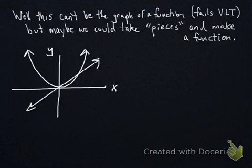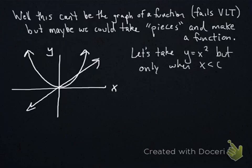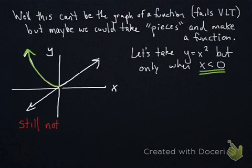Here's what I mean by take pieces of it. Let's take the piece of y equals x squared, but only when x is less than 0. So I'm going to erase all of the stuff where x is actually bigger than 0. You probably noticed that this still is not a function, so that's a bummer.